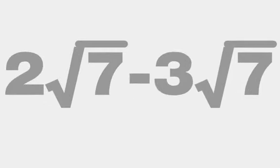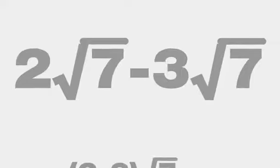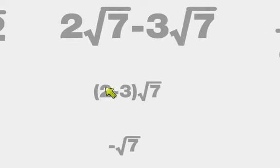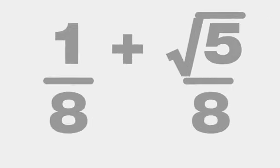Let's do this one. 2 times the square root of 7 minus 3 times the square root of 7. Again, all you're doing is taking that 2, subtracting it from 3, and you get negative times the square root of 7. Notice that this was negative 1, and I got rid of the 1, but I left the negative there. What about this guy? 1 eighth plus the square root of 5 eighths.